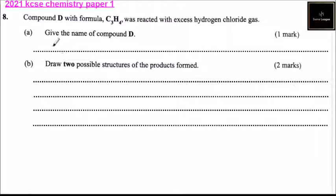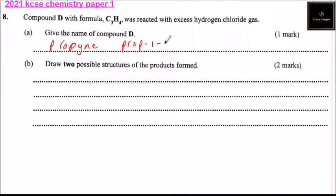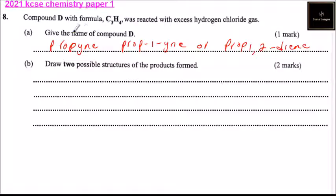So compound D, we call it propyne. It is an alkyne. And depending on where the triple bond is, we can also say it is prop-1-yne or prop-1-yne — that is the compound D which was reacted.